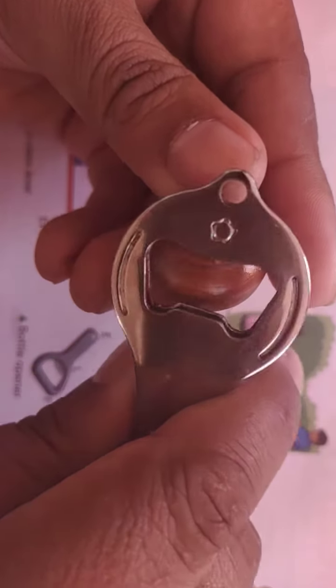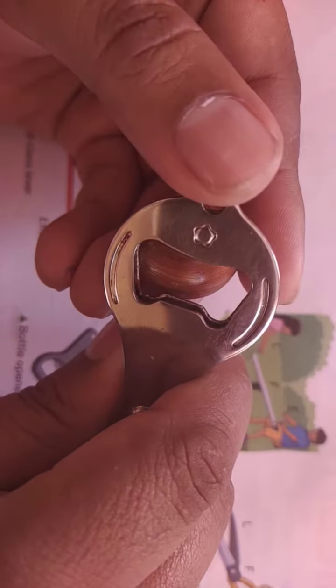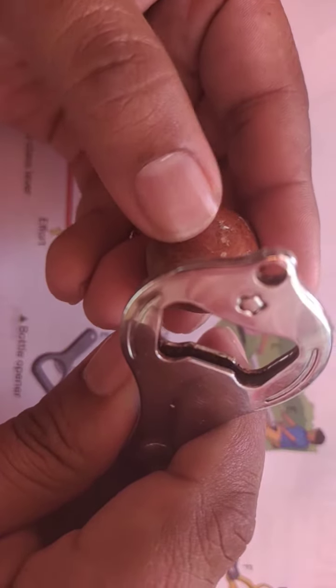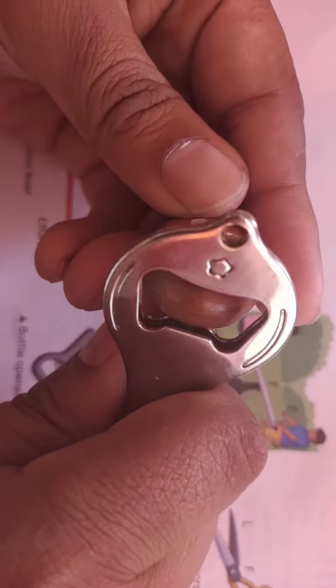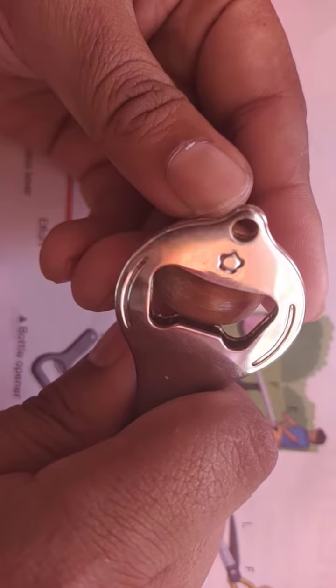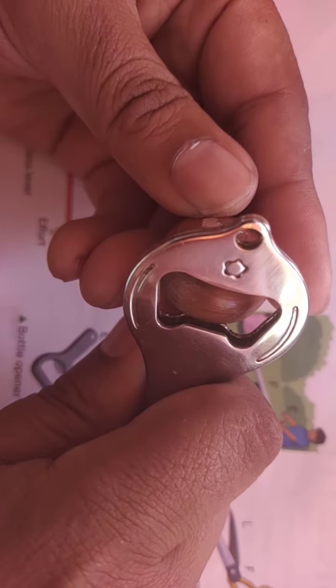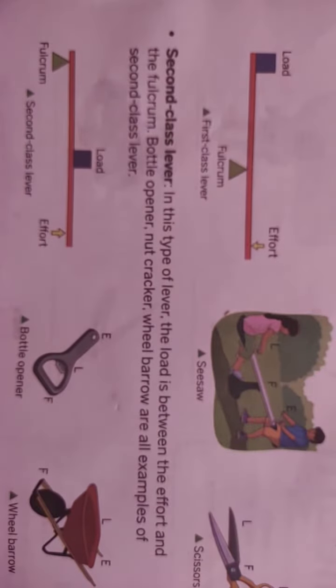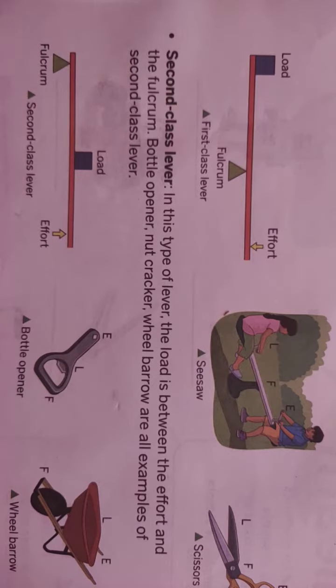The bottle gets opened. The fulcrum is over here, the load is in the middle, and the effort is over here. So the cover of the bottle gets opened - this is the case of second class lever.